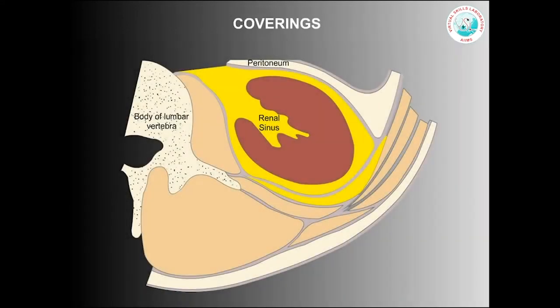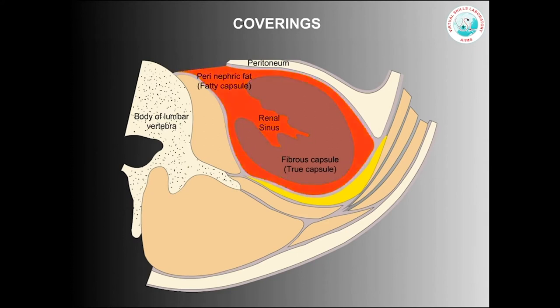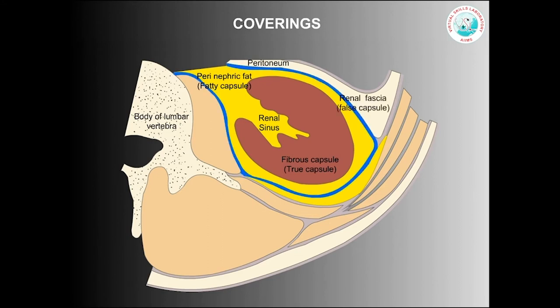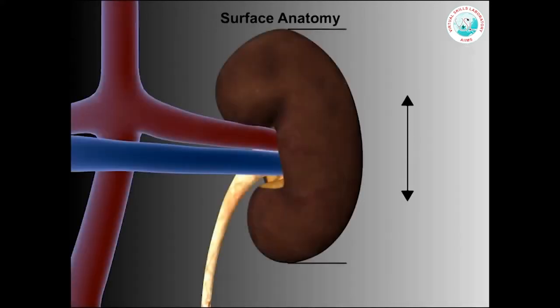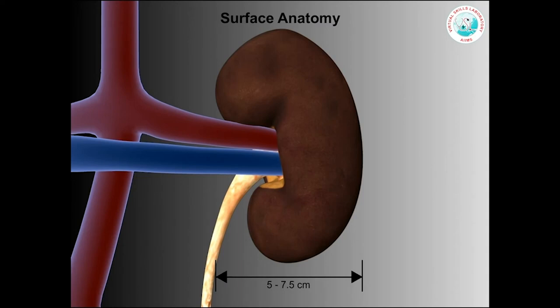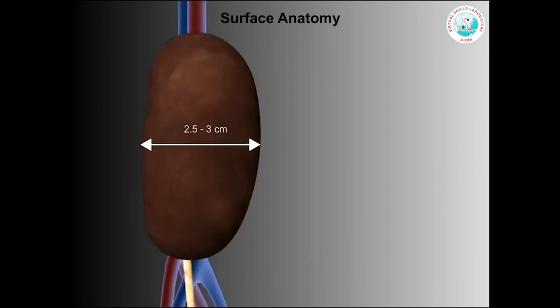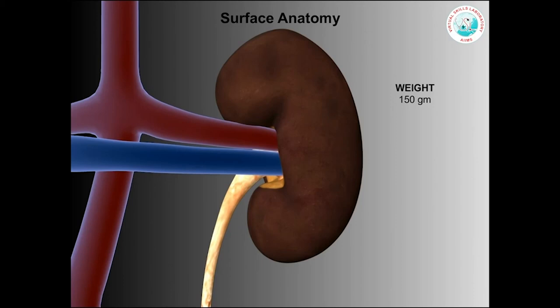The kidney is protected by a fibrous capsule, surrounded on the outside by perinephric fat, followed by the renal fascia — that is the Gerota's fascia — and the paranephric fat. It can be remembered that while in simple nephrectomy for benign diseases, the kidney is removed within the renal fascia, whereas in radical nephrectomy for cancer, the entire contents of the perinephric fat are removed. Our kidney measures 11–12 cm in length, 5–7.5 cm in width and 2.5–3 cm in thickness — students can remember it as 12, 6 and 3. It weighs around 150 grams.